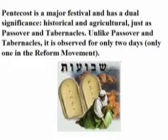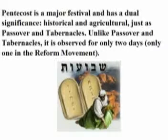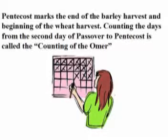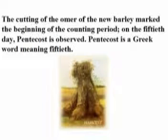Pentecost is a major festival with dual significance: historical and agricultural, just as Passover and Tabernacles. Unlike Passover and Tabernacles, it is observed for only two days — one in the Reform movement. Pentecost marks the end of the barley harvest and the beginning of the wheat harvest. Counting the days from the second day of Passover to Pentecost is called the counting of the Omer. The new barley marked the beginning of the counting period, and on the fiftieth day Pentecost is observed.